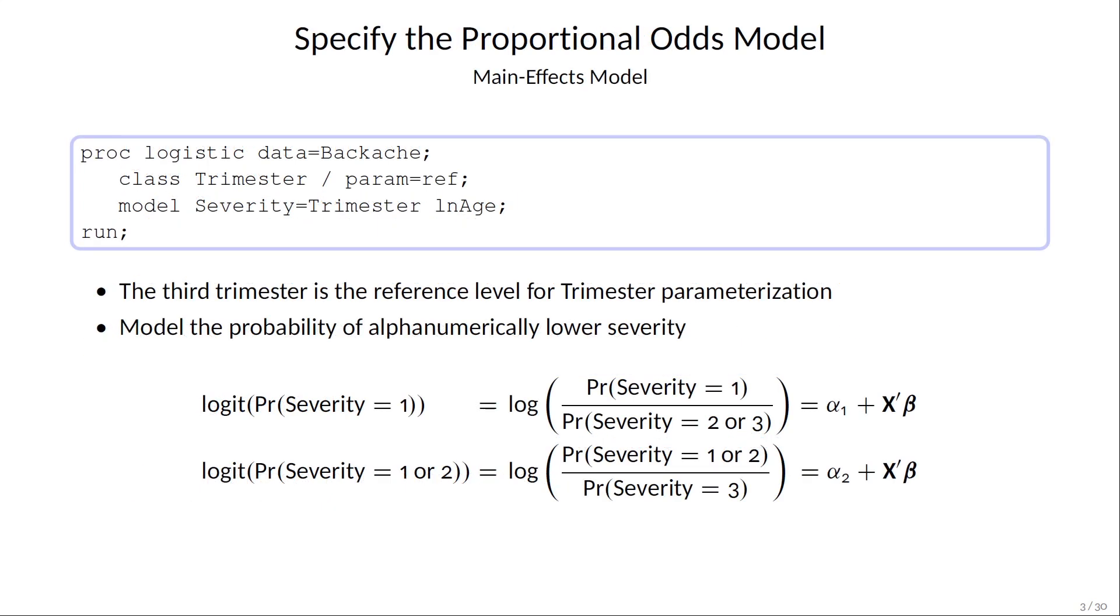PROC LOGISTIC fits the proportional odds model by default. Here we're just using main effects. The cumulative logits are the logs of worse severity versus less severity. For the linear predictors, the intercepts for the two functions are different, but the slopes are the same. We'll fill in the covariates soon.